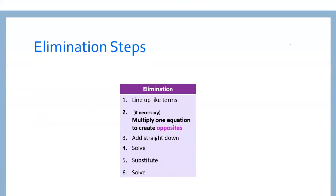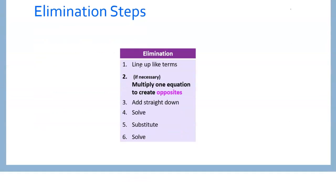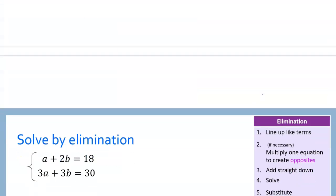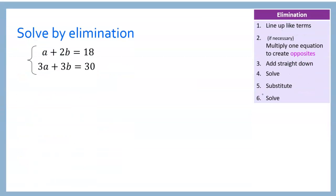We're revising our elimination steps now. We line up like terms initially, and then we just added this new step: if needed — if we need to create opposites that aren't already there — we multiply one equation by a number to create opposites. Everything else is the same. So let's look at an example of that. We'll look at our a and b variables and ask: is there a way we can make these variables cancel by multiplying one of the equations by something?